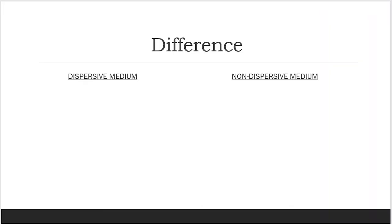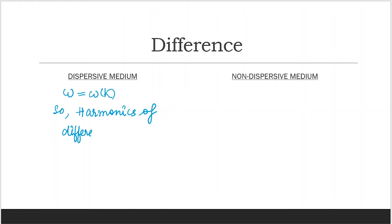So what is the difference between dispersive and non-dispersive medium? In dispersive medium, omega is a function of k. In simple words, harmonics of different frequencies have different velocities.